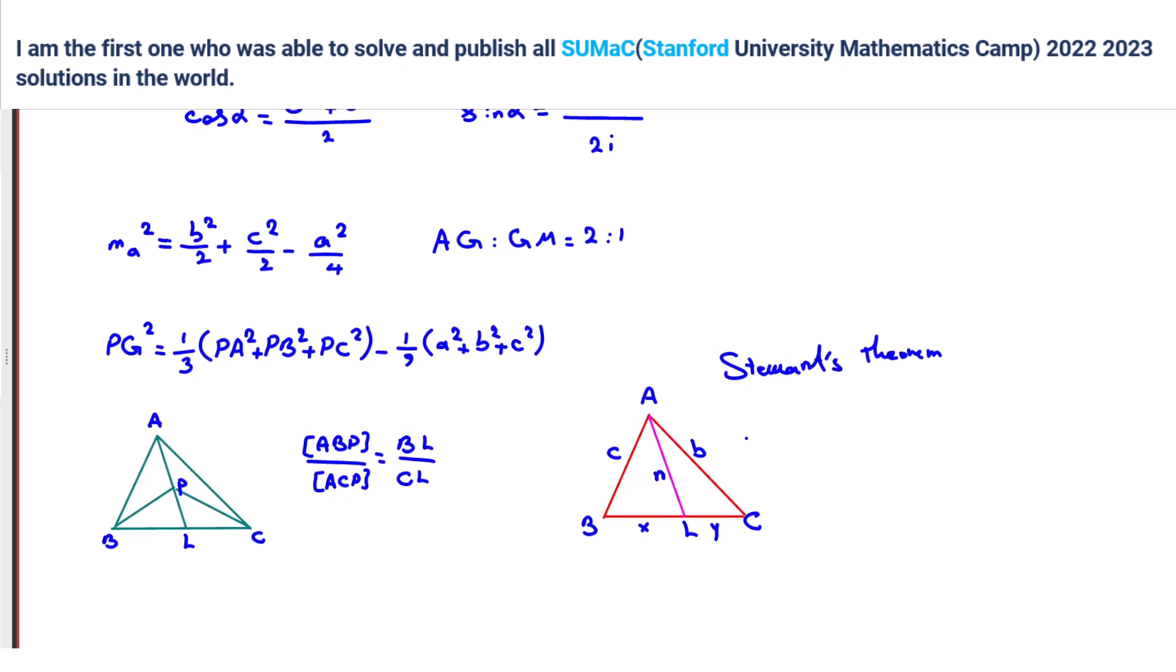This one, for example, is N. Then we have what? Yeah, I remember it a different way. So, XY times X plus Y plus N squared times X plus Y equals B squared X plus C squared Y.